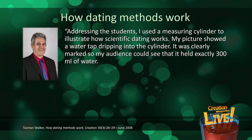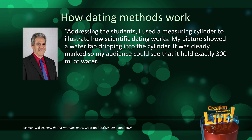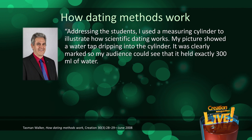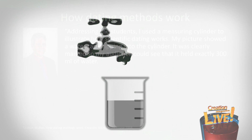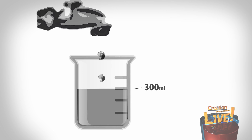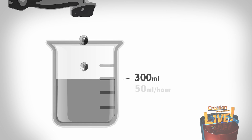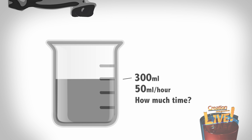He writes: Addressing the students, I used a measuring cylinder to illustrate how scientific dating methods work. My picture showed a water tap dripping into the cylinder. It was clearly marked so my audience could see that it held exactly 300 mL of water. The diagram also showed that the water was dripping at a rate of 50 mL per hour. I asked, 'How long has the water been dripping into the cylinder?'